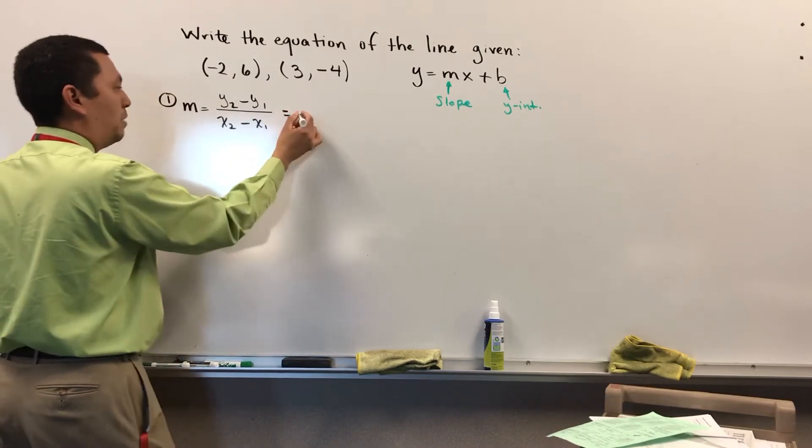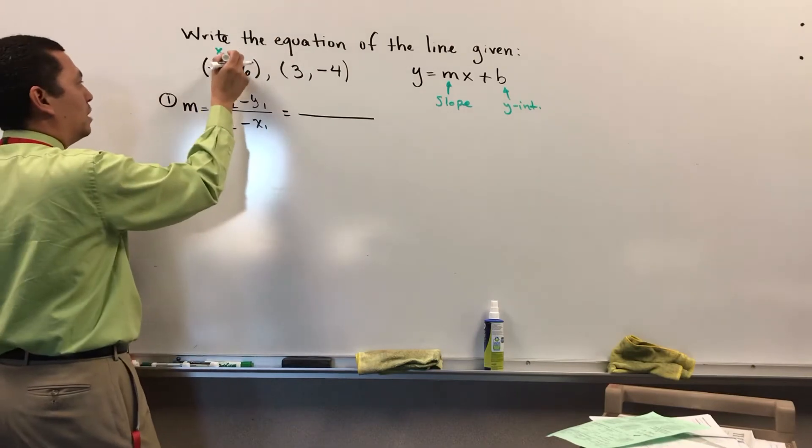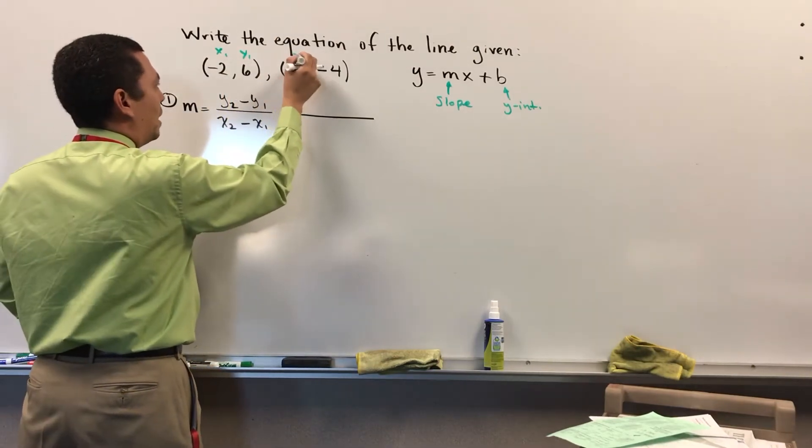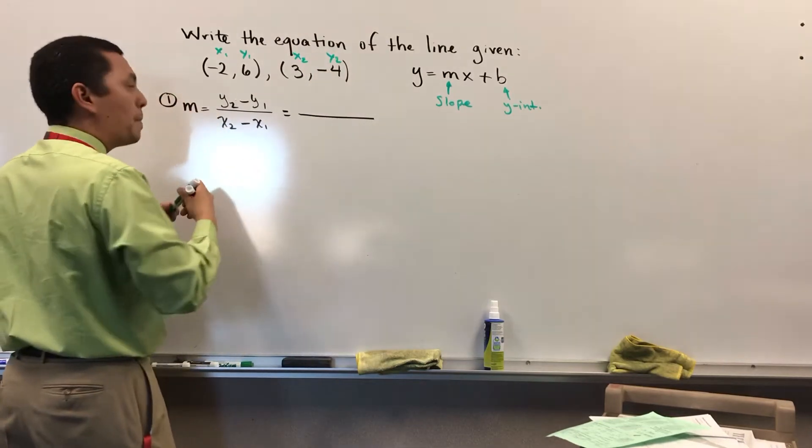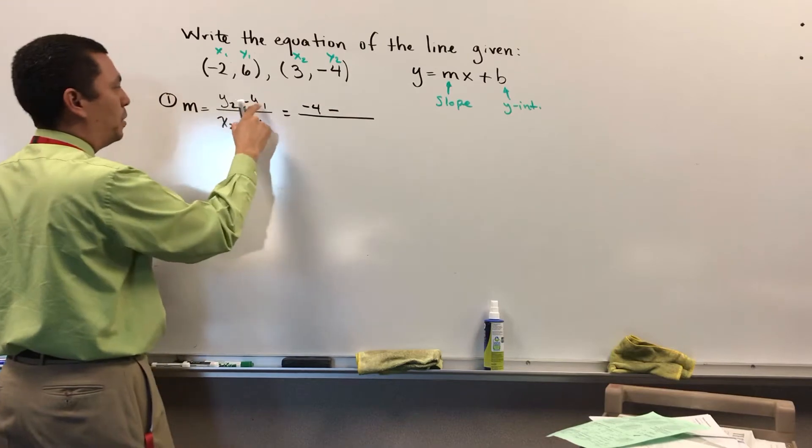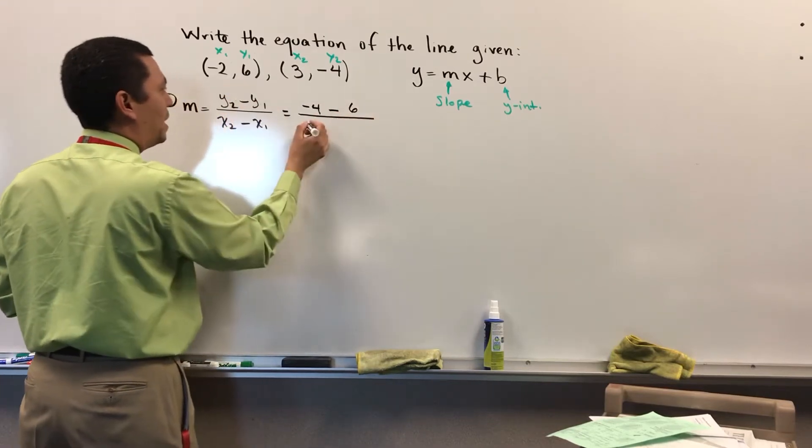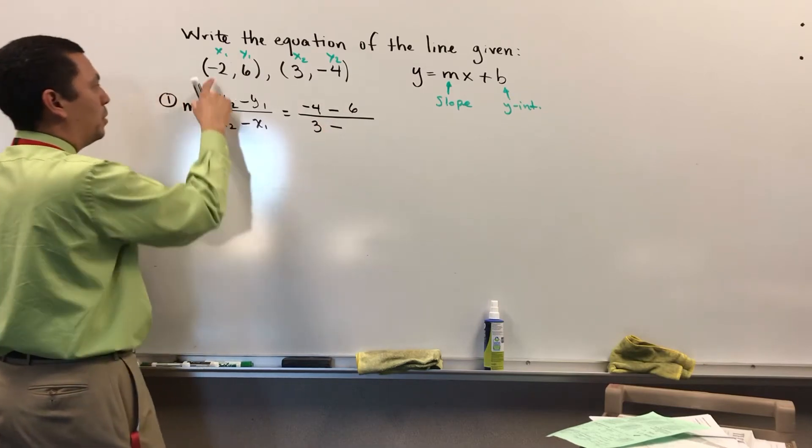We're going to do the substitution. If you mark your points x1, y1, x2, y2, so we have negative 4 minus from the formula 6. And then I have 3 minus from the formula negative 2.